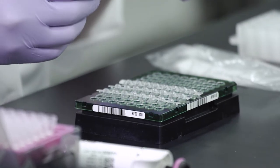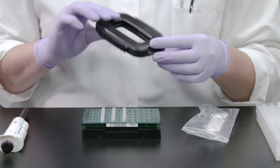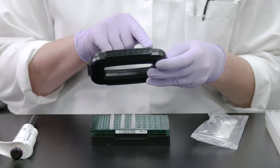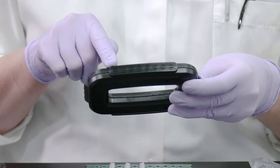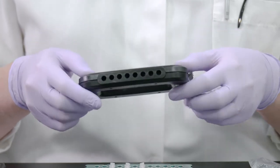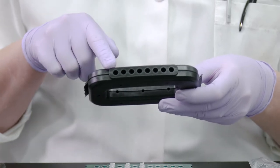There are two sides or surfaces of the capping tool. For flat cap strips, use the flat surface side of the tool. For domed caps, use the surface with holes that align with the domed caps.